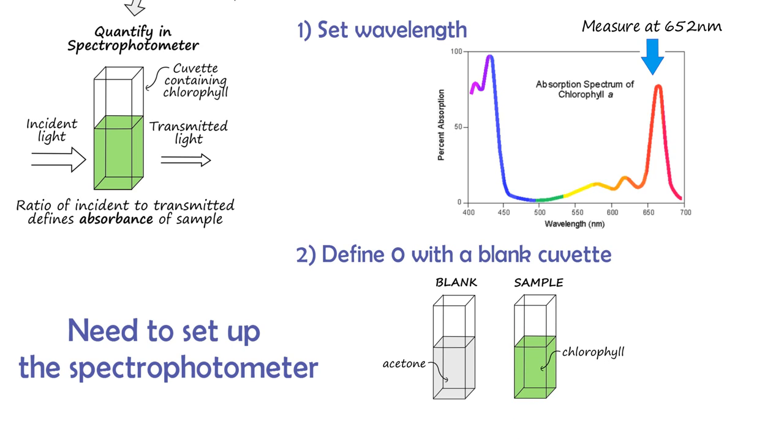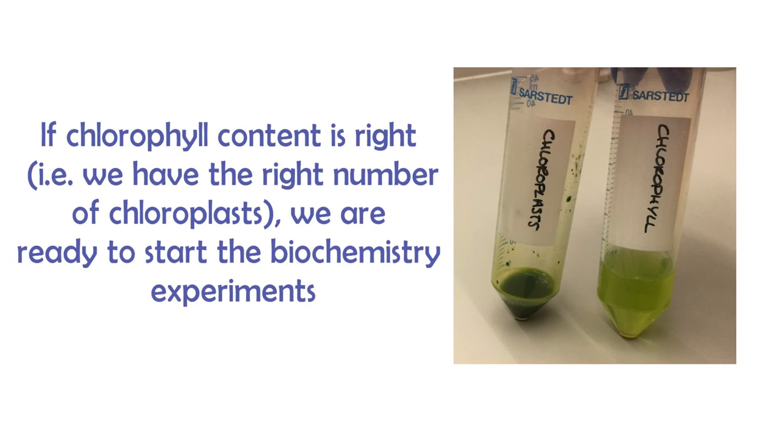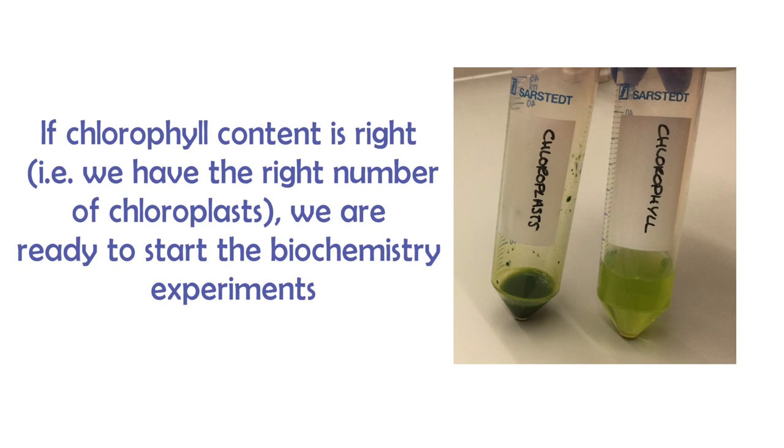This cuvette of acetone is referred to as a blank, and every time you set a new wavelength on the spec, you need to re-zero it with a new blank solution. Once we've checked the chlorophyll content of the extract is suitable for use, we can then move to the biochemical assay part of the experiment, which is described in another video.